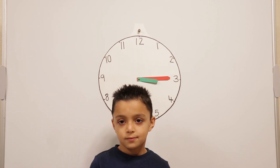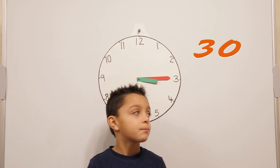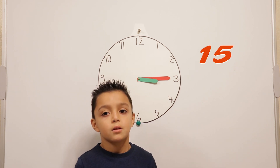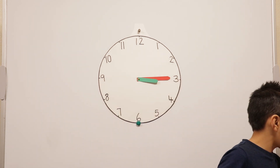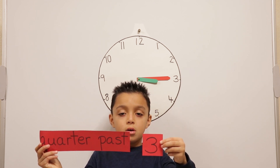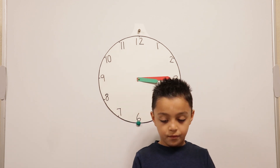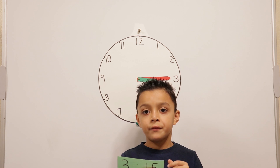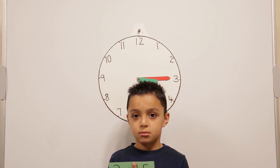Can we remind everyone at home how many minutes in one hour? Sixty. And how many minutes in half an hour? Thirty. And how many minutes in a quarter of an hour? Fifteen. How would we write quarter past three? We could either write it as 'quarter past three', or we could write it as three colon fifteen. And why fifteen? Because fifteen minutes is a quarter of an hour, and quarter past means fifteen past.